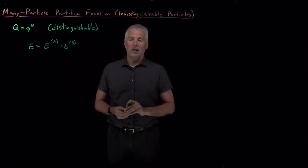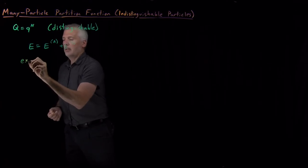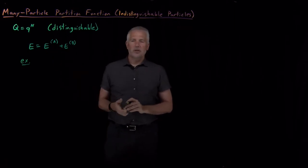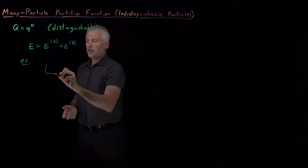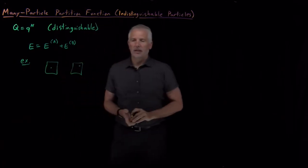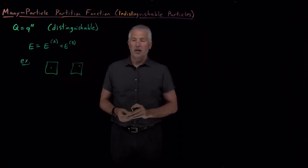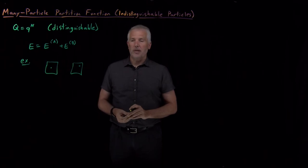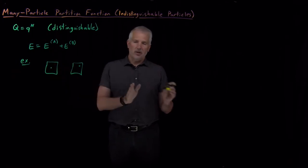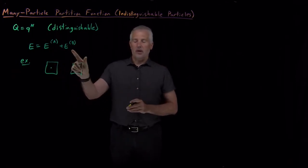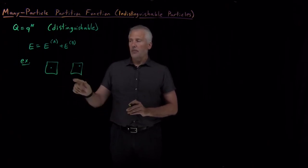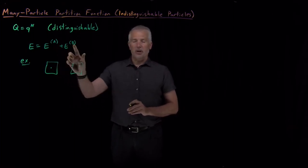There are circumstances where that's perfectly reasonable. For example, if two particles are in completely separate containers — one molecule on one side of the room, another molecule on the other side — they might be identical molecules, but we can tell which one is molecule A and which is molecule B. We walk to one side, measure the energy, and know we're measuring particle A; walk to the other side and we know we're measuring particle B. So those are identical but distinguishable particles.